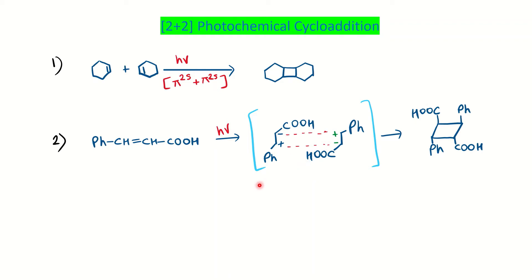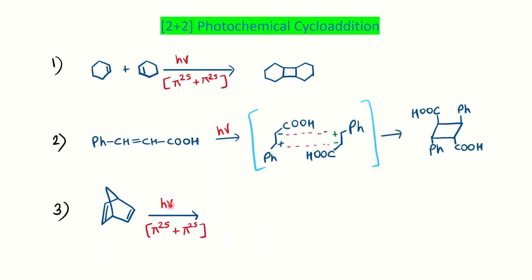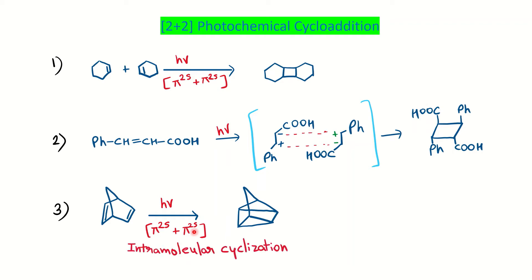In the next example, again under photochemical conditions, you have two non-conjugated double bonds. If you imagine free radical formation at the double bond positions, it is going to be an intramolecular 2+2 cycloaddition reaction under photochemical conditions — π2s + π2s.